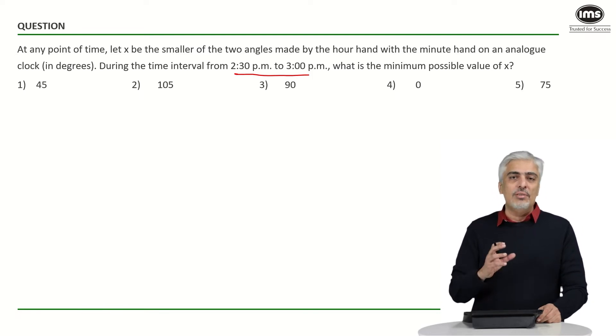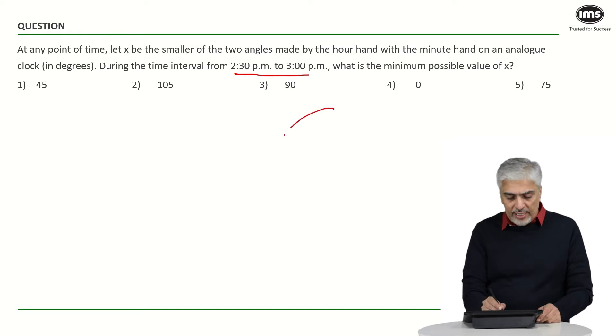You know ideally you could just think of this question even orally without drawing any diagram, but I'm just going to represent using a small diagram. I'm going to try and draw the analog clock for you. So say this is 12 o'clock, this would be roughly 1, 2 and 3, and this is 6.